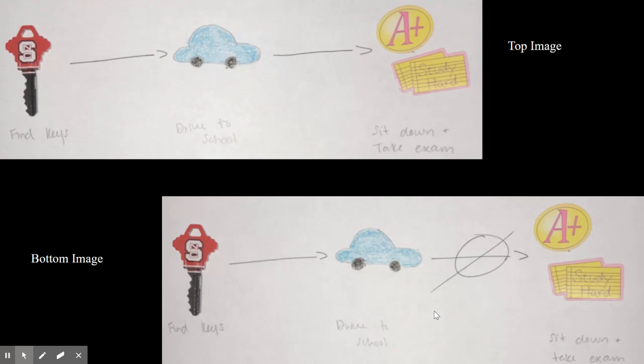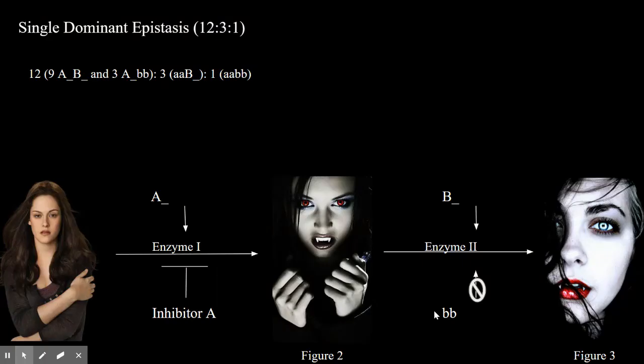This demonstrates that two or more different gene loci contribute to the same phenotype. In this example sitting down and taking the exam was the final phenotype.